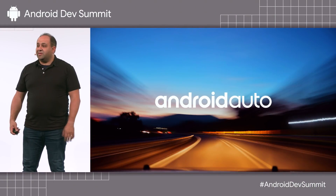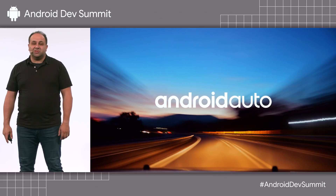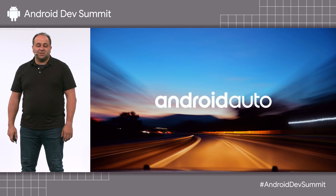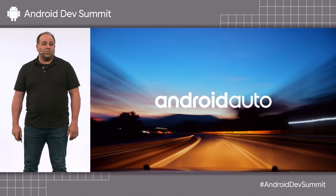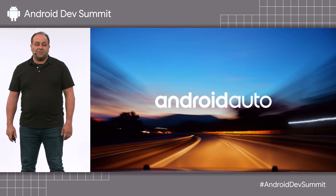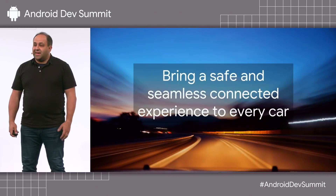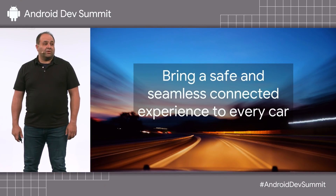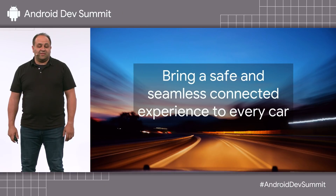We're incredibly excited at Google about the automotive space right now because we see it going through a huge transformation in connectivity, electrification, interfaces and sensors, sharing, and autonomy. Cars are rapidly turning into full-blown computers on wheels, with high-speed mobile connections, cameras, microphones, and screens of all shapes and sizes everywhere. Android Auto is an effort from Google and our automotive partners to bring these advances together and create a safe and seamlessly connected experience for drivers everywhere.